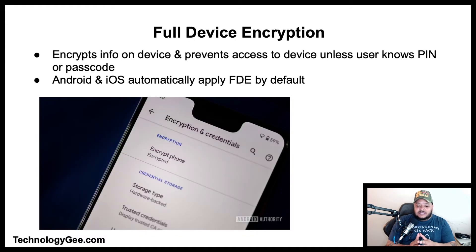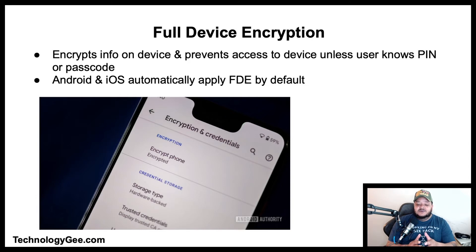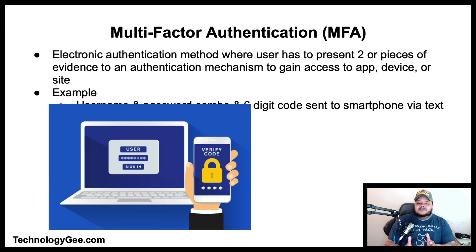Full disk encryption is a technology that protects information by converting it into unreadable code that cannot be easily deciphered by unauthorized people. Full device encryption encrypts information on a device and prevents access unless the user knows the PIN or passcode. Android and iOS devices automatically apply full device encryption the moment the authorized user locks the device.